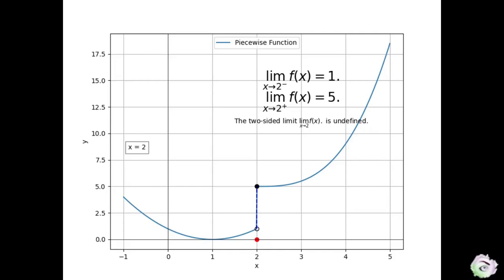This will help us find the value of the function at this point. To find the value of the function at x equals 2, we need to draw a vertical line through the red dot at x equals 2. The y-coordinate of the point where the graph intersects the vertical line will give the function value at x equals 2.